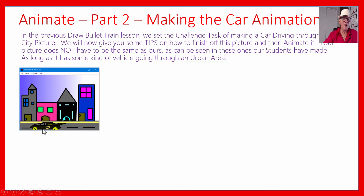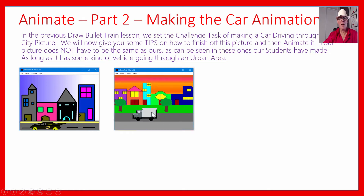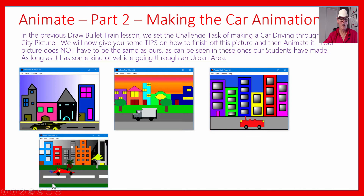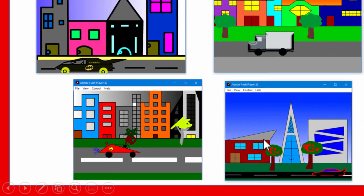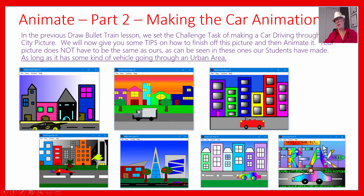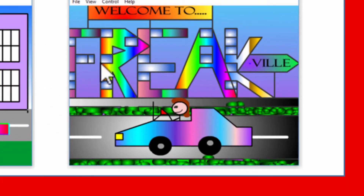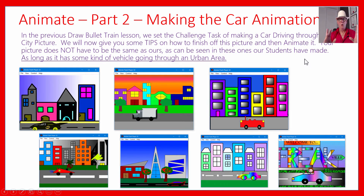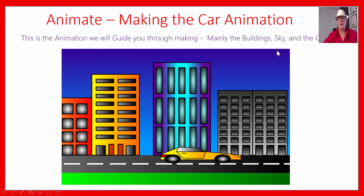Here are some of the ones our students made: the Batmobile, a truck driving through the city, a cute little car, a triangle car with triangular buildings, a rainbow car driving through a pastel-colored city, and one student made an amazing scene — she put different gradient blocks to spell out 'Freakville' and had a rainbow pastel car with funny back wheels. You don't have to do the one we're making here — if you want to do a bus or a truck, that's fine.